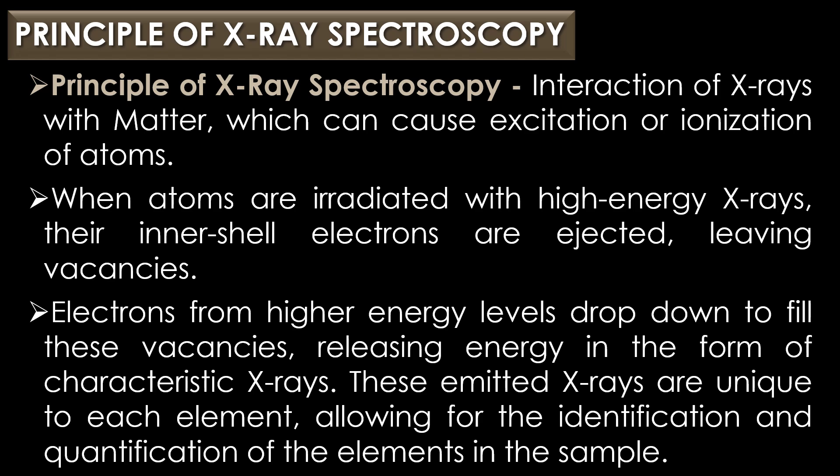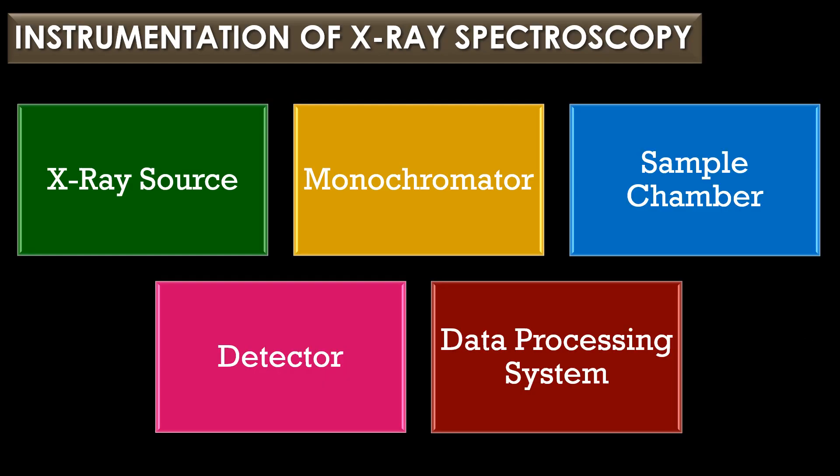The instrumentation of X-ray spectroscopy contains five major parts: X-ray source, monochromator, sample chamber, detector, and data processing system.